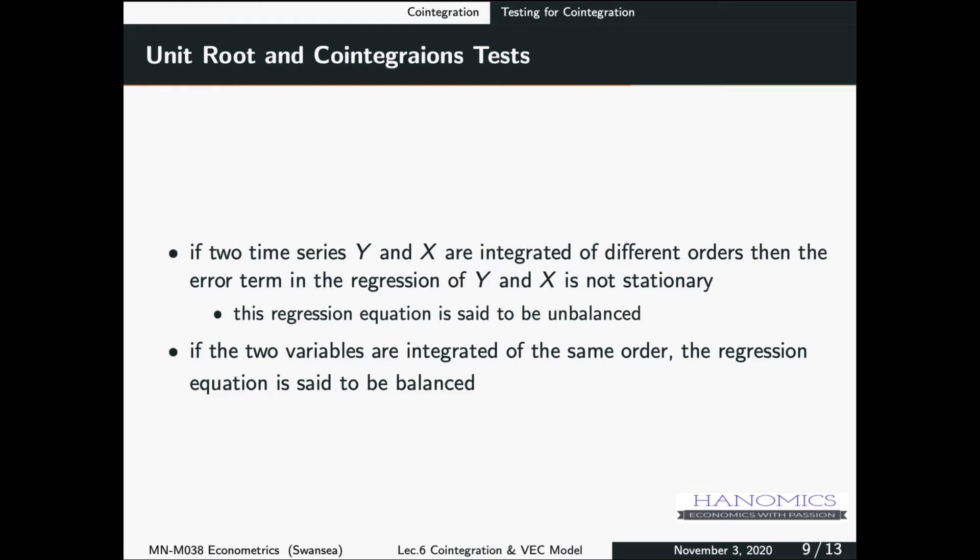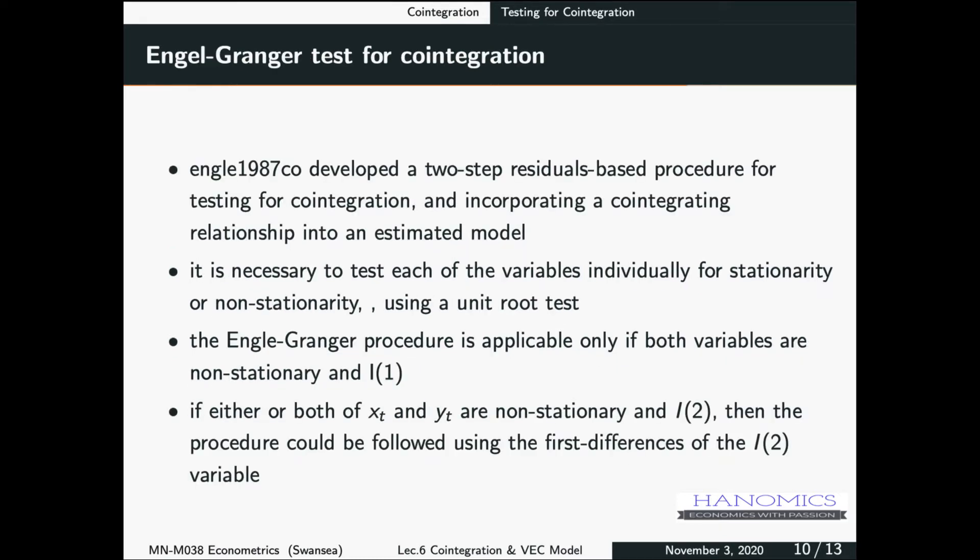And this is what Engel-Granger test does. So Engel-Granger, in 1987, they developed a two-step residual-based procedure for testing for cointegration. We want to see whether we have cointegration, it's very straightforward, so you estimate the model, you obtain the residual, and then you test the residual. Because what we want to do, we want to have variables that in level are I1, but then when we run the regression, we find the residual to be I0, and that's when we decide that we have cointegration.